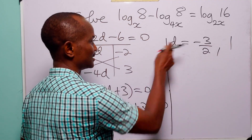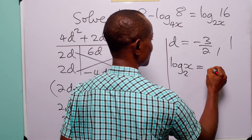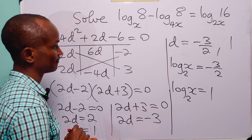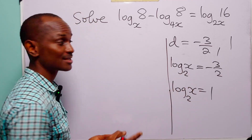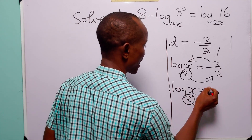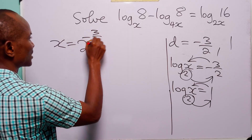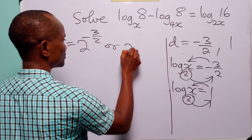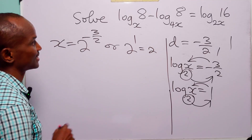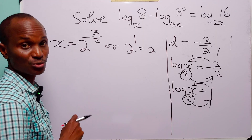Recalling that d = log base 2 of x, we back-substitute. When d = 1: x = 2¹ = 2. When d = −3/2: x = 2^(−3/2). So the two values of x that satisfy the logarithmic equation are x = 2 and x = 2^(−3/2).